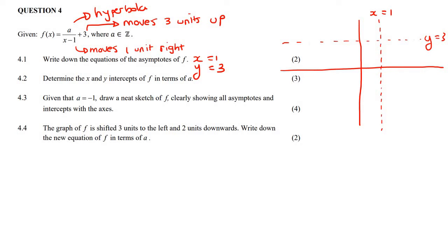Next question, determine x and y intercepts in terms of a. So we know that y is equal to a over x minus one plus three. To find the x intercept, how do we do that? We make y zero. We've been doing this since grade nine. So we make y zero. Now you must solve this however you're comfortable with. I'm going to take the three to the left.